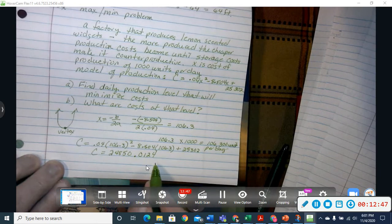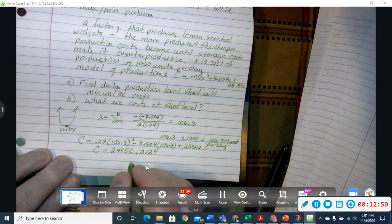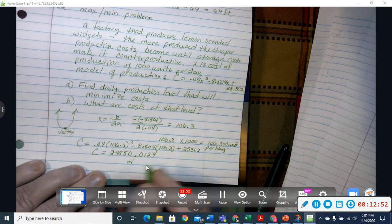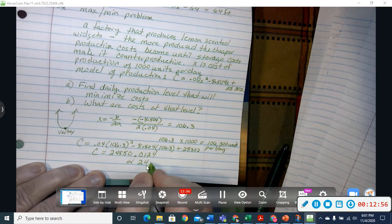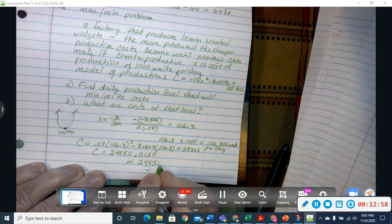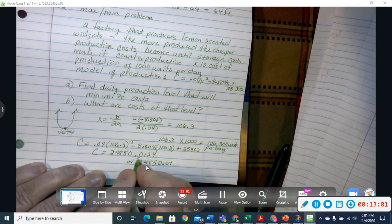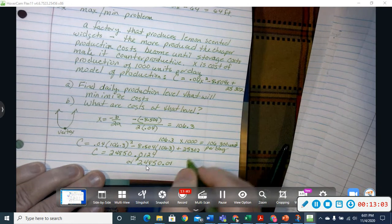Now, if we're dealing with money, we wouldn't leave our answer in that form, so we would change that to a form for money, 24850.01 for our cost.